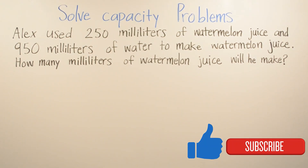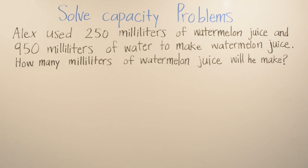Today we are going to talk about soft capacity problems. For this example, Alex used 250 milliliters of watermelon juice and 950 milliliters of water to make watermelon juice. How many milliliters of watermelon juice would he make?